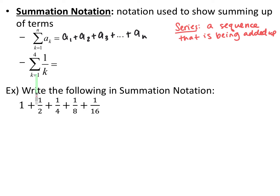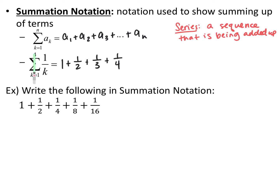So for this next summation, we're summing up from term 1 to term 4 of the sequence 1 over k. Pause the video and just write out the summation. So I wrote out the first four terms of the sequence 1 over k — 1, 1 half, 1 third, 1 fourth — and added them up. Whenever you see this notation, it means add up all the terms in this sequence from whatever term they list first down here up to the term they list last up here.